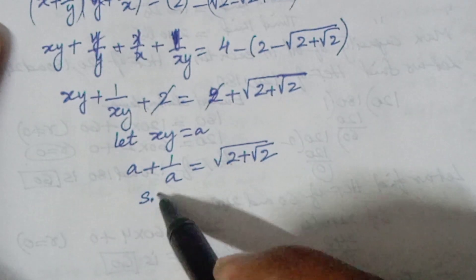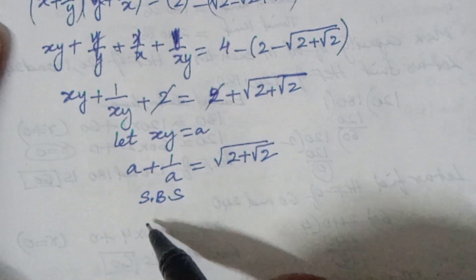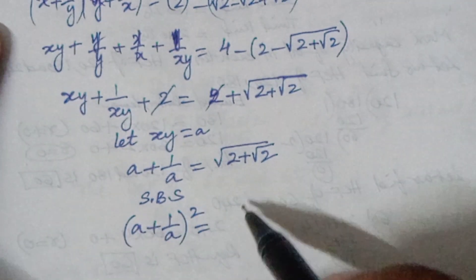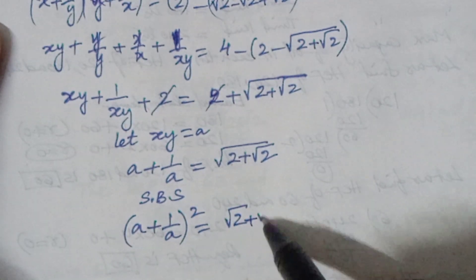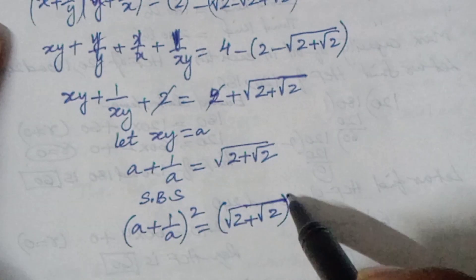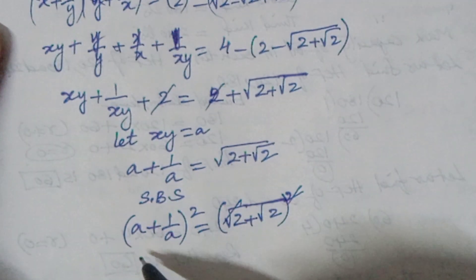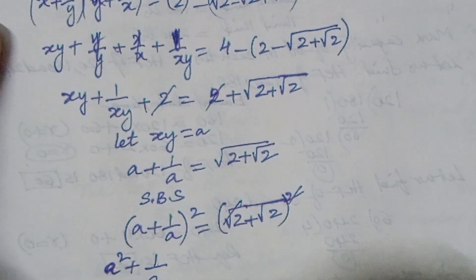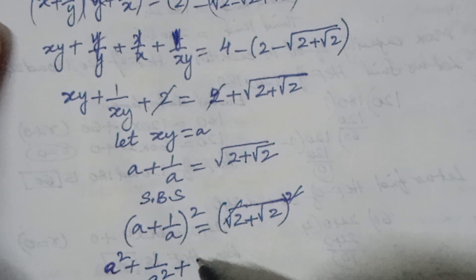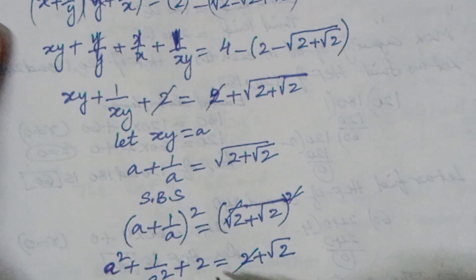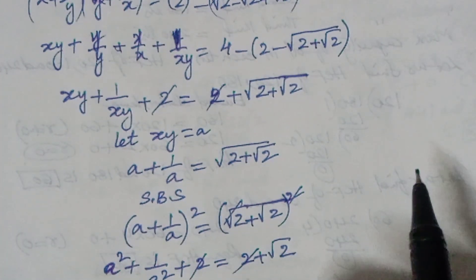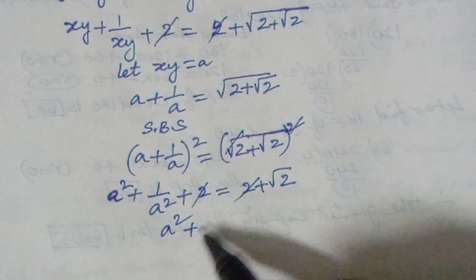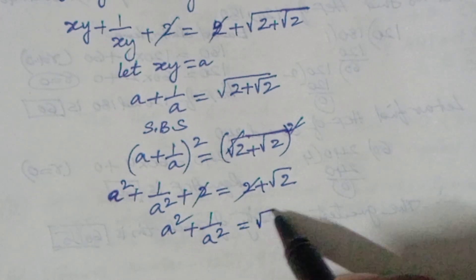Squaring on both sides: a plus 1 by a whole squared equals root 2 plus root 2 whole squared. The square and root cancel, giving a squared plus 1 by a squared plus 2 equals 2 plus root 2. Therefore a squared plus 1 by a squared equals root 2.